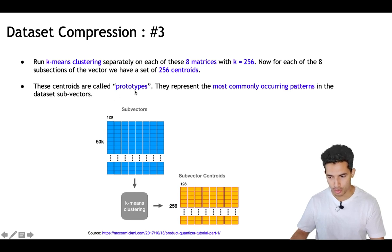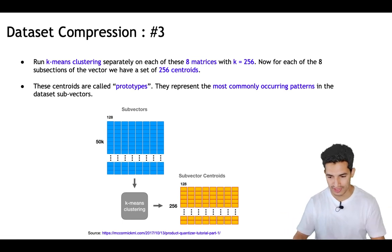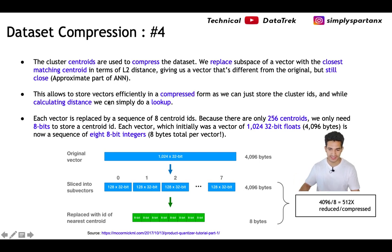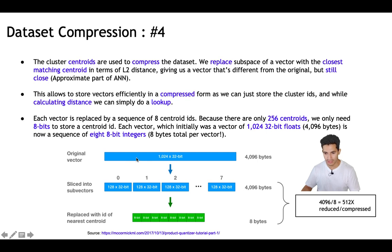With k = 256, for each sub-matrix we will have 256 possible clusters. The centroids are called prototypes and they represent the most commonly occurring pattern in a sub-vector. What we achieve by doing all this is data compression. We replace the sub-space of a vector with the closest matching centroid in terms of L2 distance. This allows us to store vectors efficiently in a compressed form, because we can just store the cluster ID, and while calculating the distance we can do a lookup.